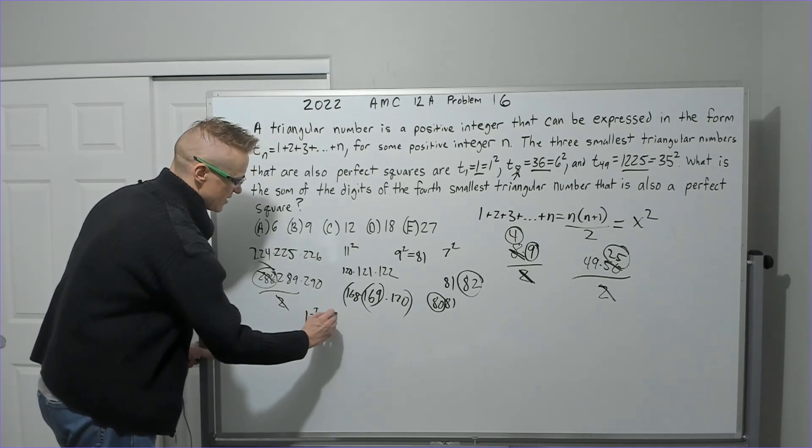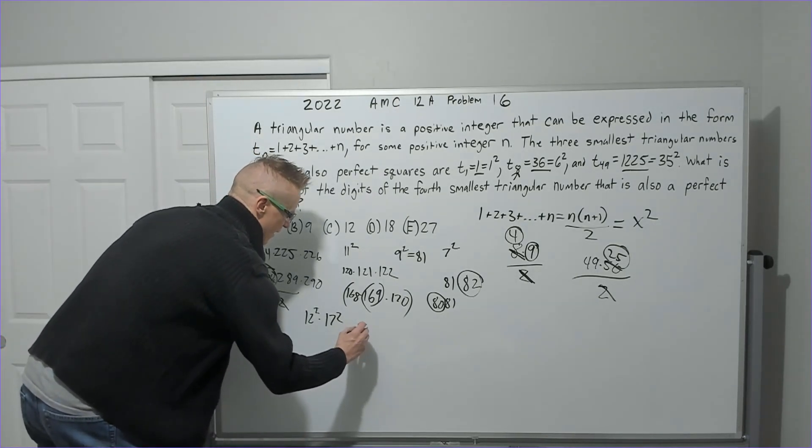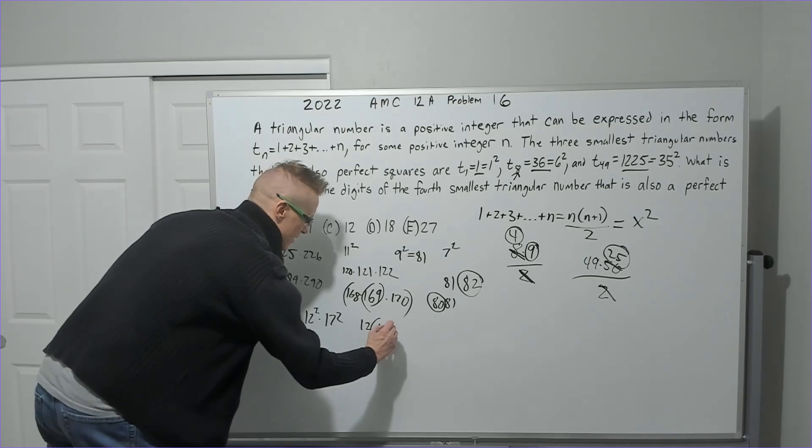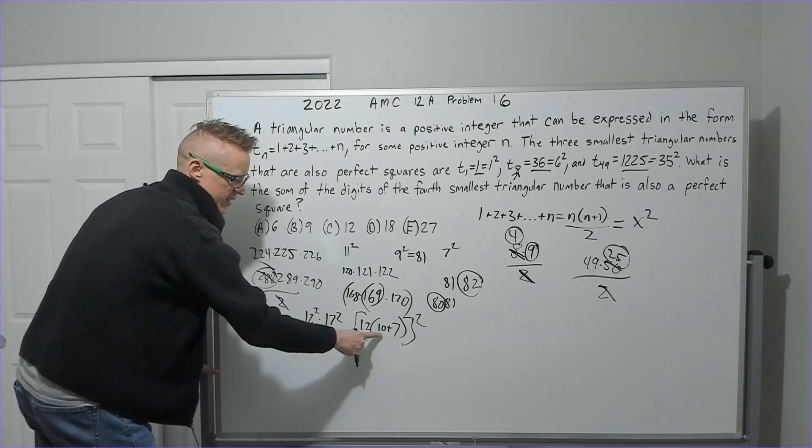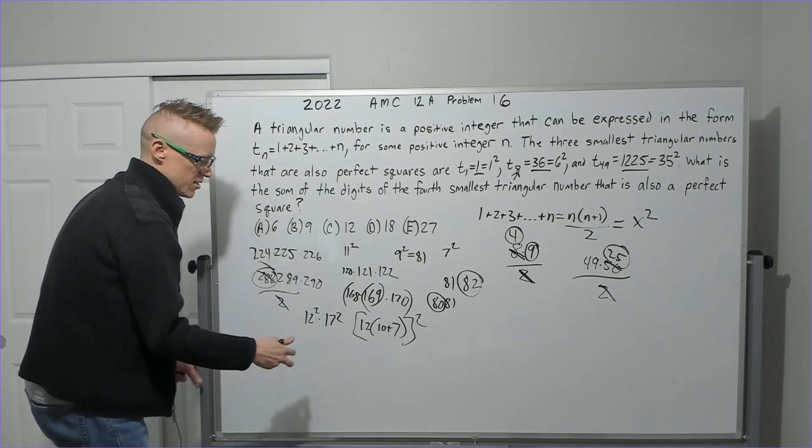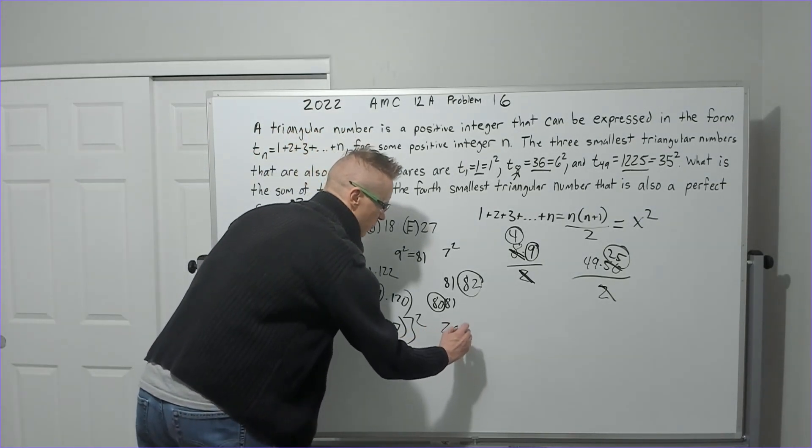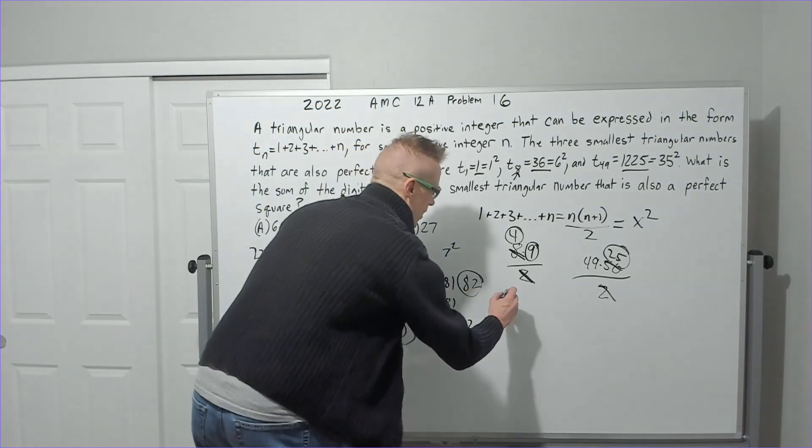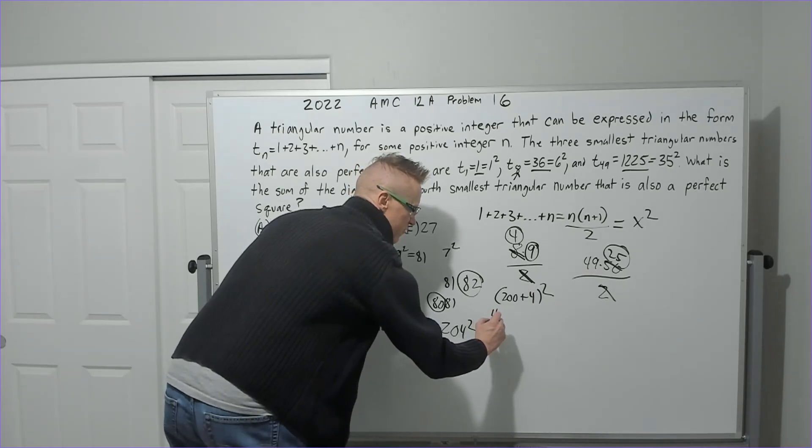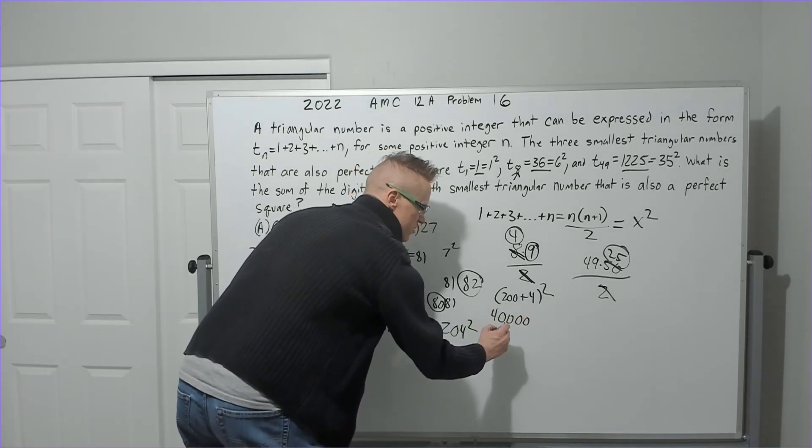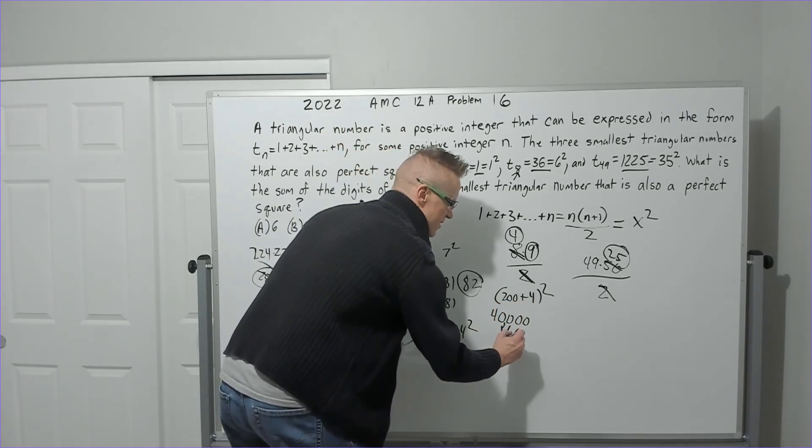I think for me what I'll do is I'm just going to do 12 times (10 plus 7) like this, and I'm going to have the squared outside. So I get 120 plus 84. 120 plus 84 is going to be 204, and we're squaring that number. So I'll write it as (200 + 4) squared. That's going to give me 40,000. This times this is 800 doubled is 1,600. 4 squared is 16. Add it to the end.